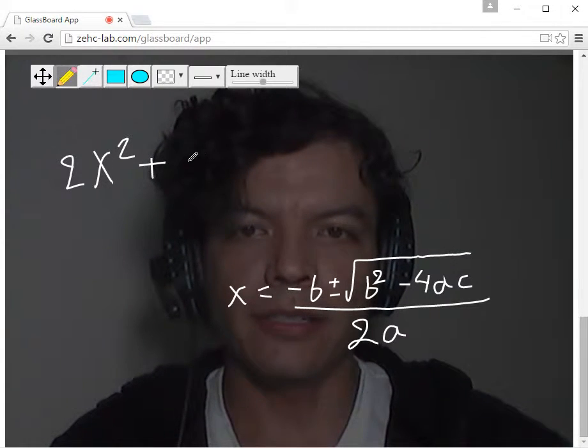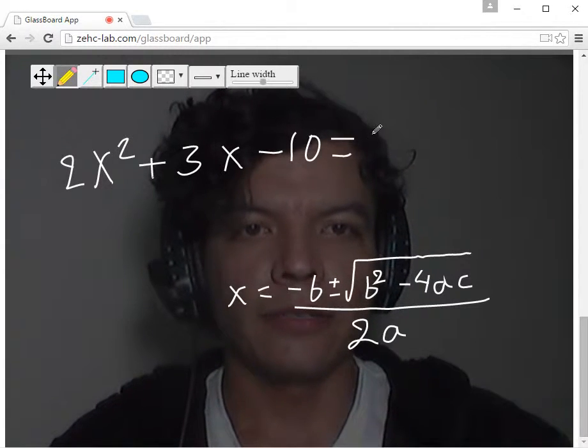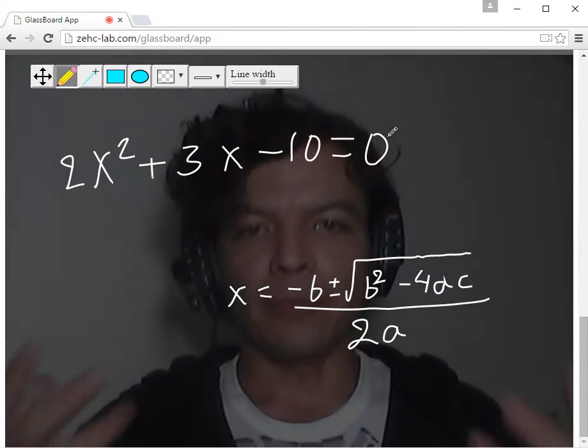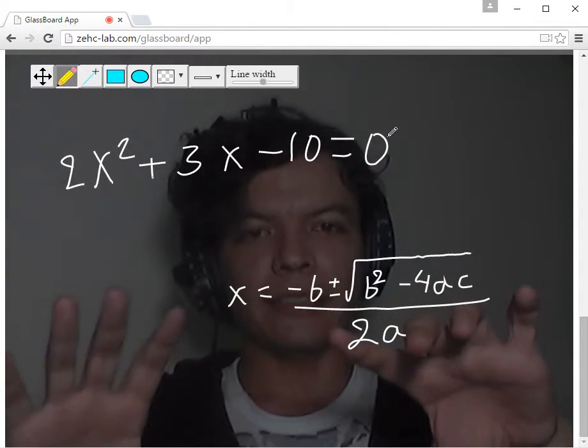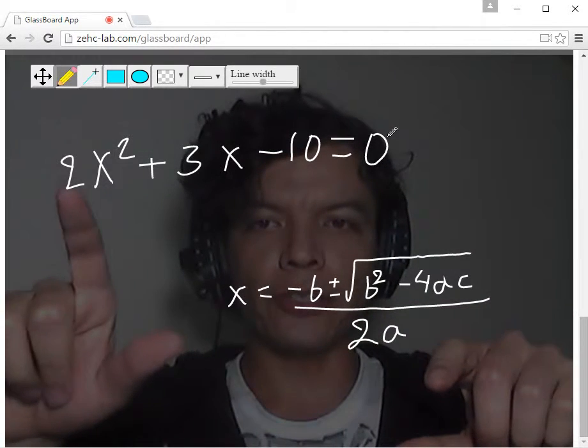Let's say it has 2x² + 3x - 10 = 0. Okay, and I can explain with my hands to my student. For example, this formula has a b, a, and c, and they come from the equation.